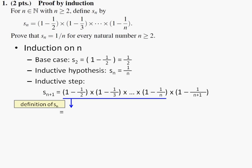it can be written as Sn times 1 minus 1 over n plus 1. And by the inductive hypothesis, Sn is 1 over n,